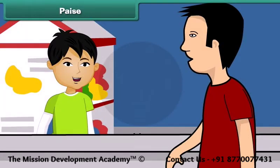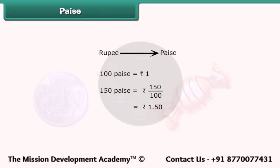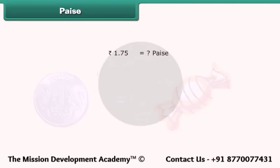Rahul purchased 1 toffee for 1 rupee. How will you convert this rupee into paise? 100 paise makes 1 rupee. Thus, 150 paise equals 150 divided by 100 rupees, which makes 1.50 rupees. When we convert paise to rupees, we divide by 100. How will you convert 1.75 rupees into paise? Multiplying 1.75 with 100, we get 175 paise.